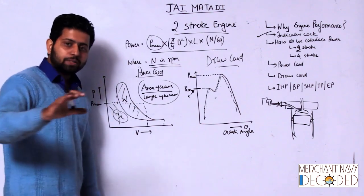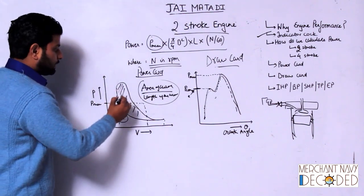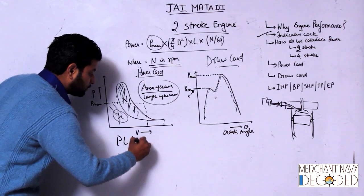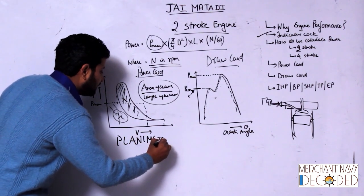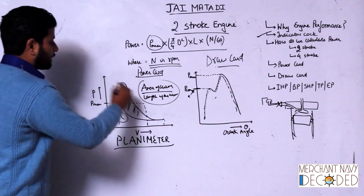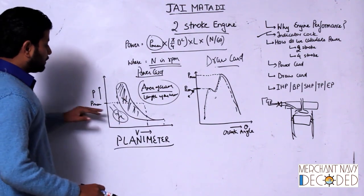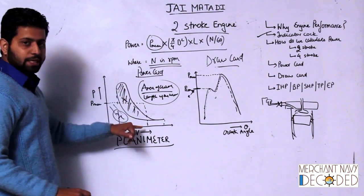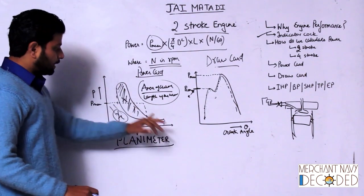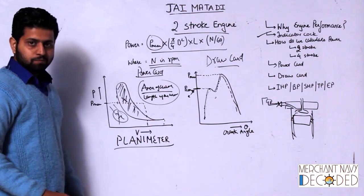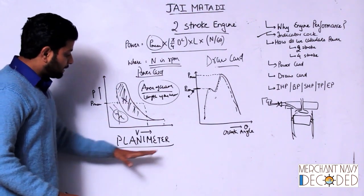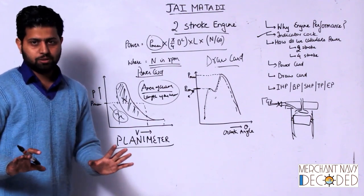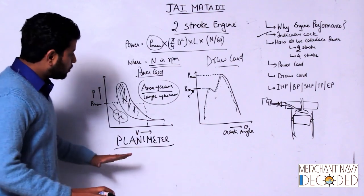How do we calculate this area? By a device called a planimeter. You make this diagram, and to calculate P mean you calculate the area and divide by the length to get P mean. You tell the interviewer: 'I calculate the area by a device called a planimeter, sir — that is all I know.'